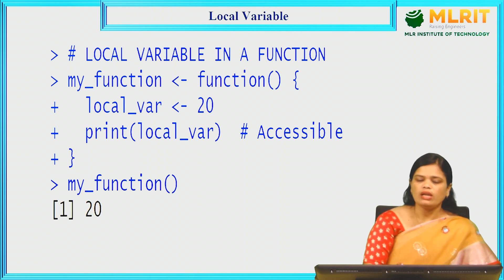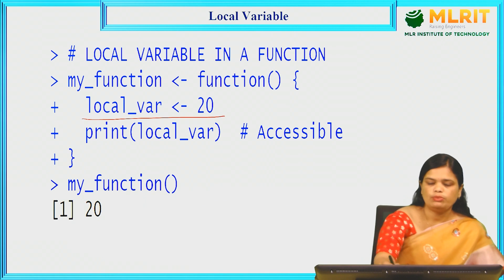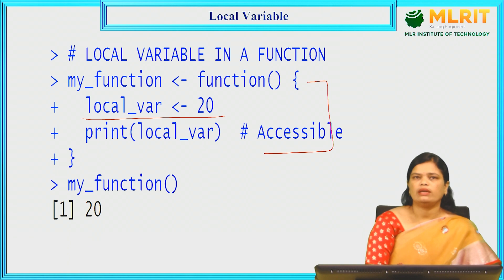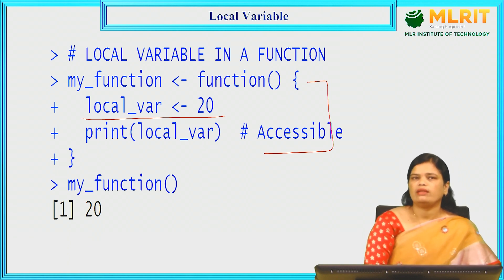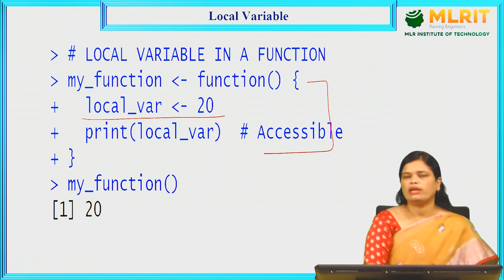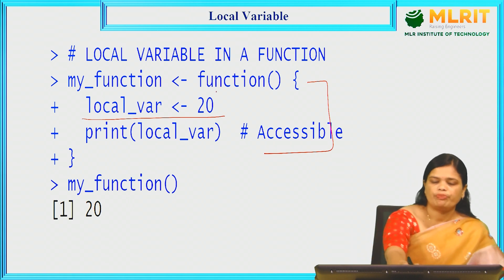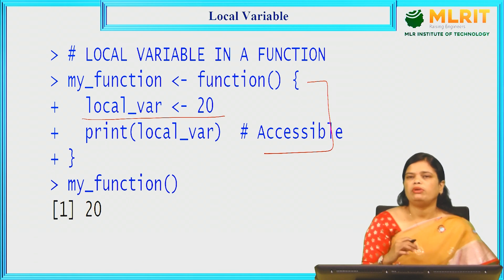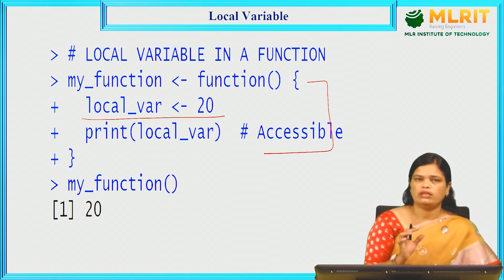A local variable is something you declare inside a function. The scope of a local variable will be from within that function only. When you declare a variable equal to 20 inside a function and try to print the value outside of it, it will not have any scope outside the function, so the value will not be printed. For a local variable, its scope is within the function only.